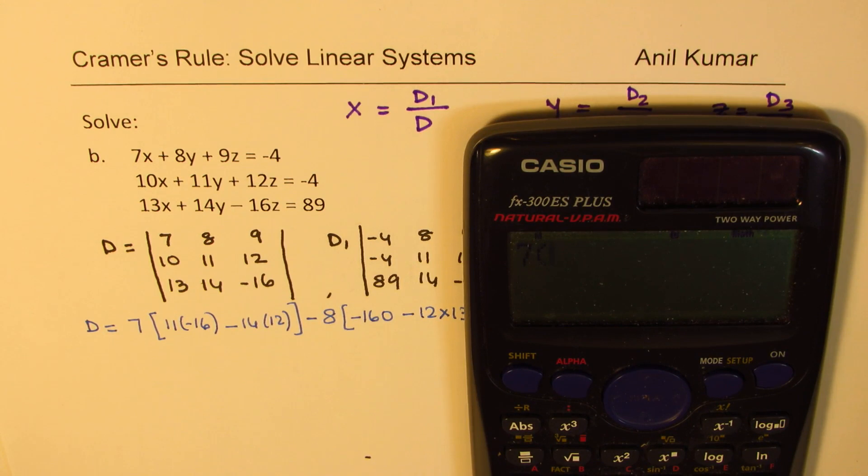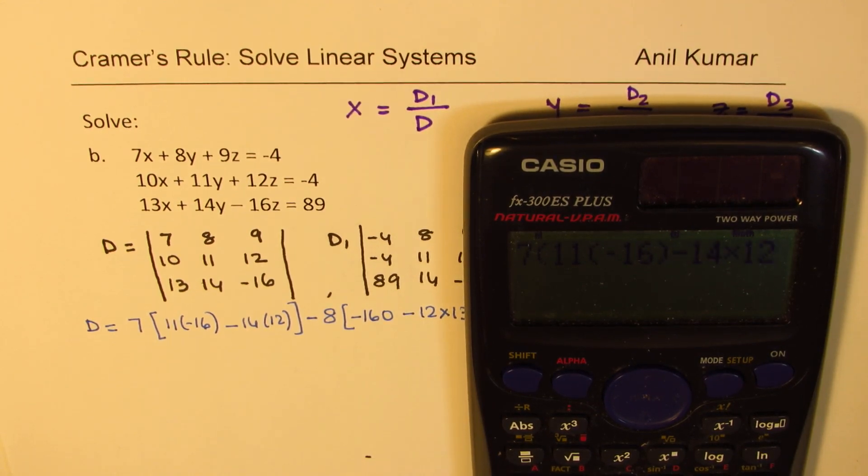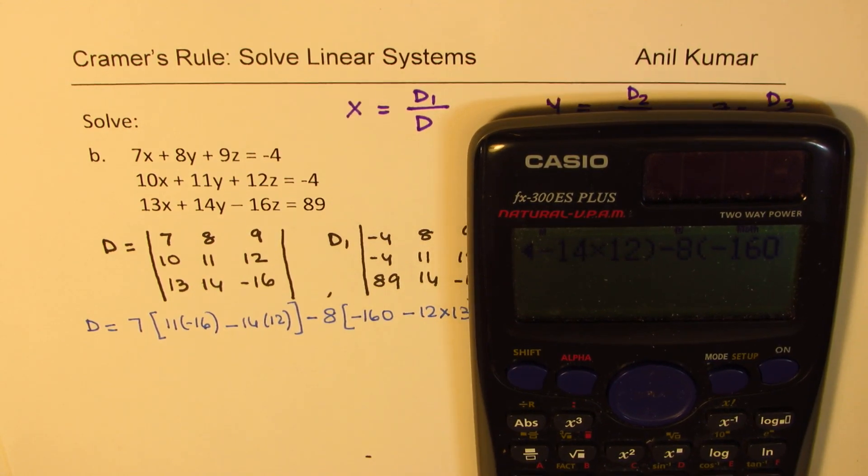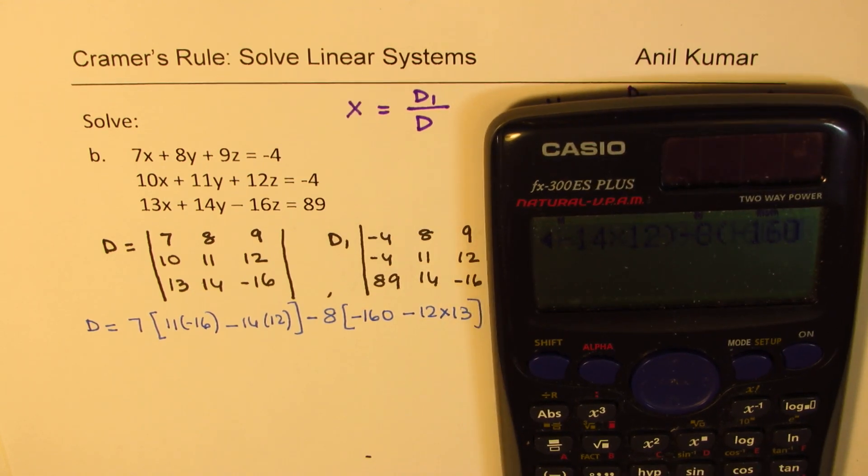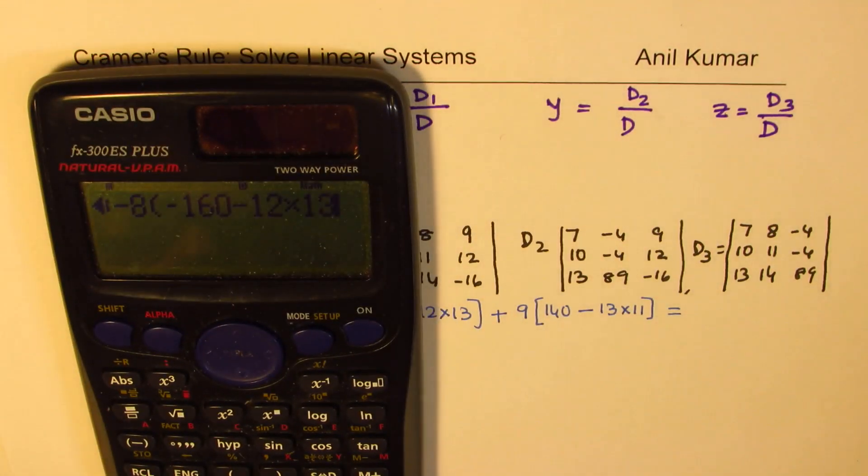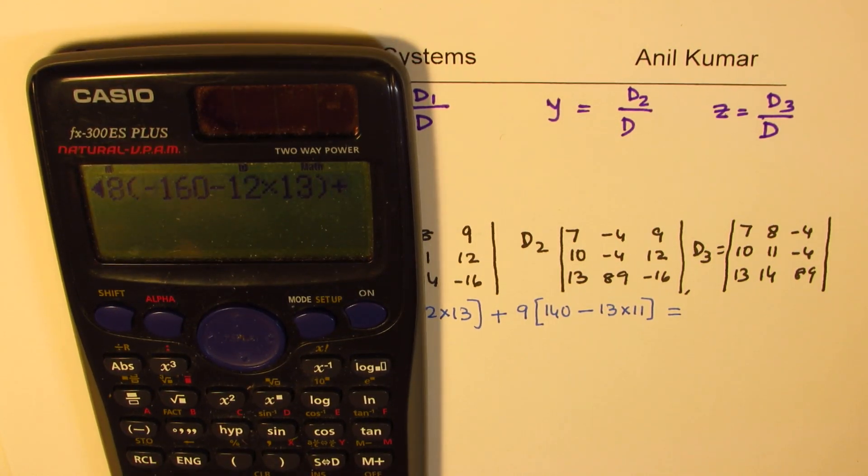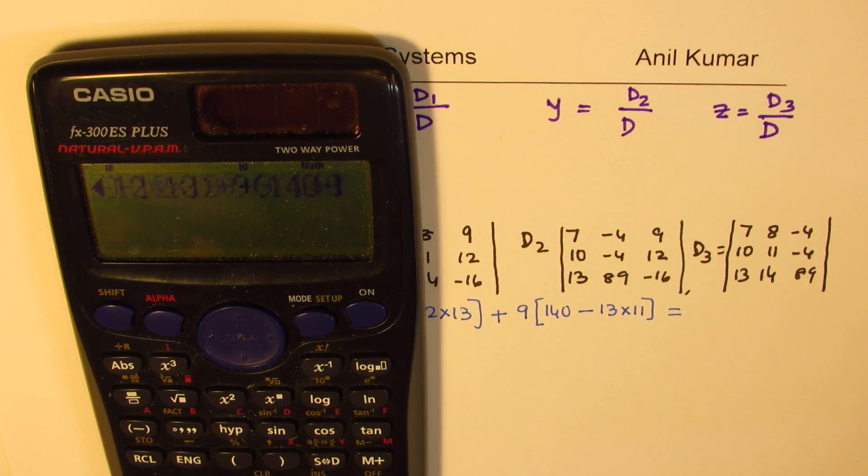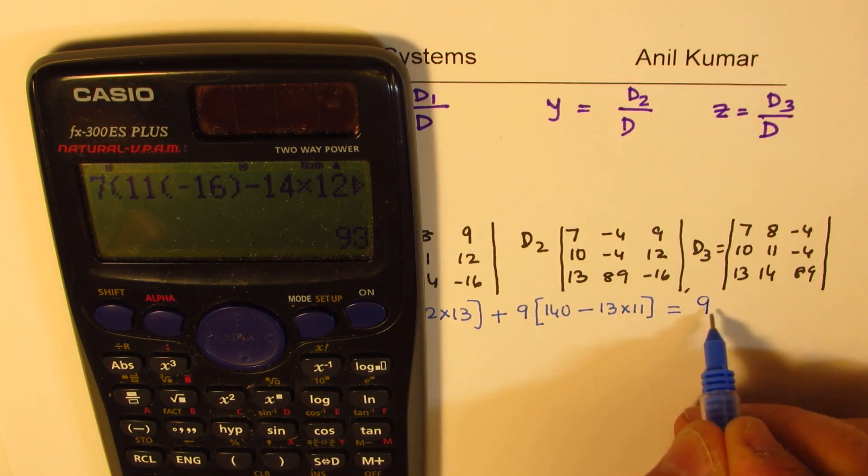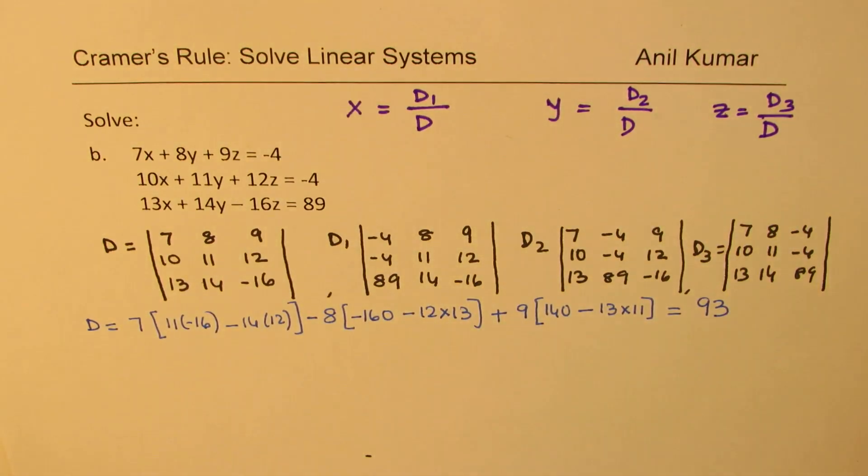So, 7 within brackets, we have minus, we'll do 11 within brackets, we'll write -16, minus 14 times 12, bracket close. Then, we have -8 times, within brackets, we have -160. It's better to use the other minus sign, otherwise, it gives error. So, 160, minus 12 times 13. And then, we have bracket close, plus 9 within brackets, 140, minus 13 times 11. And then, what do we get? We get 93 as a result. So, it's a simple calculation.